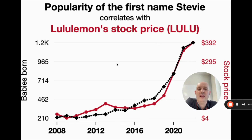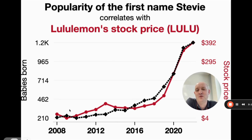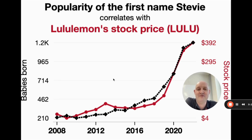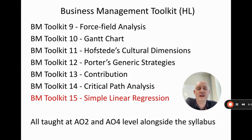One final thing to note: this shows a correlation between the popularity of the first name Stevie and the Lululemon stock price, and there's a lovely correlation there. My point is that correlation doesn't always mean there is a real relationship between two variables — there might be random things that naturally correlate. We have to be careful about drawing conclusions that aren't really there. That is simple linear regression finished — I'll see you next time.